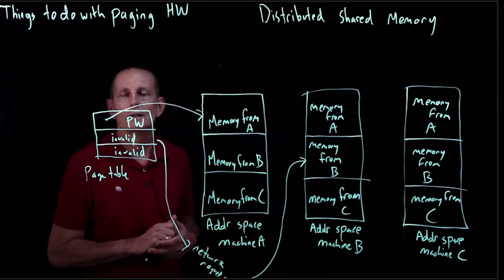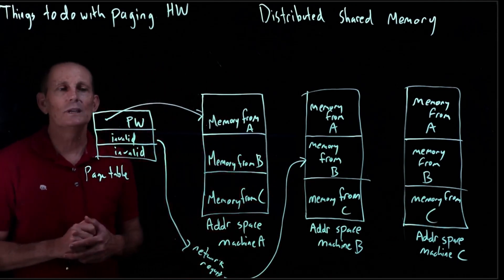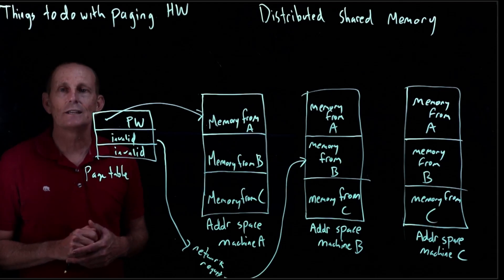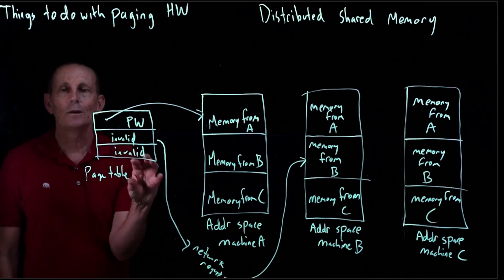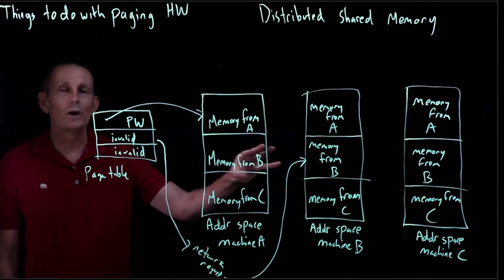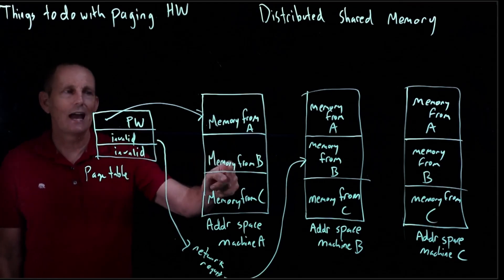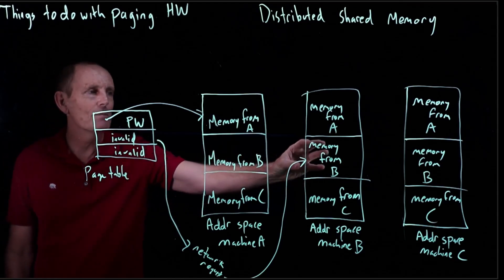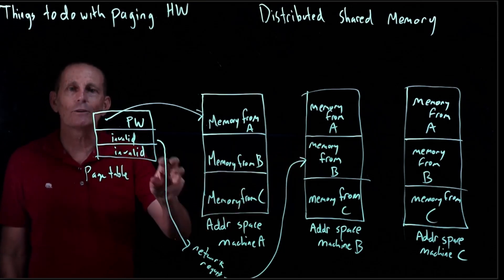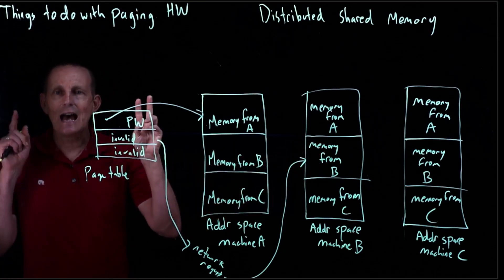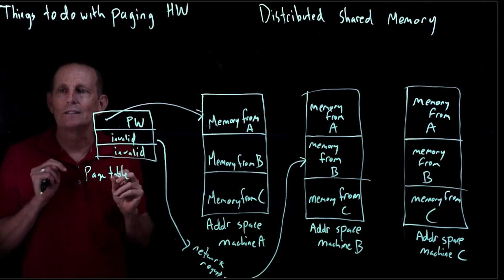Now this can get fairly elaborate. It could be that we're going to have the actual current contents of a page stored on one of these machines. If A is the one that's reading or writing to this address space, maybe the memory will actually migrate over to machine A and A has ownership of that.